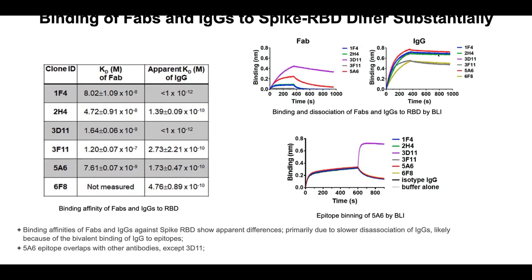Then we started seeing things that distinguished these antibodies from others. Following the red line — which is 5A6, one of the three I showed on the first slide — 5A6 is our lead compound that we wanted to study because of its unique properties. We wanted to see how it bound onto the receptor binding domain relative to the others in terms of epitope mapping. We bound 5A6 onto the tip and looked at whether the other antibodies bound similarly. All but one bound to overlapping epitopes; 3D11 and 5A6 were two distinct binding sites on the receptor binding domain that blocked ACE2.